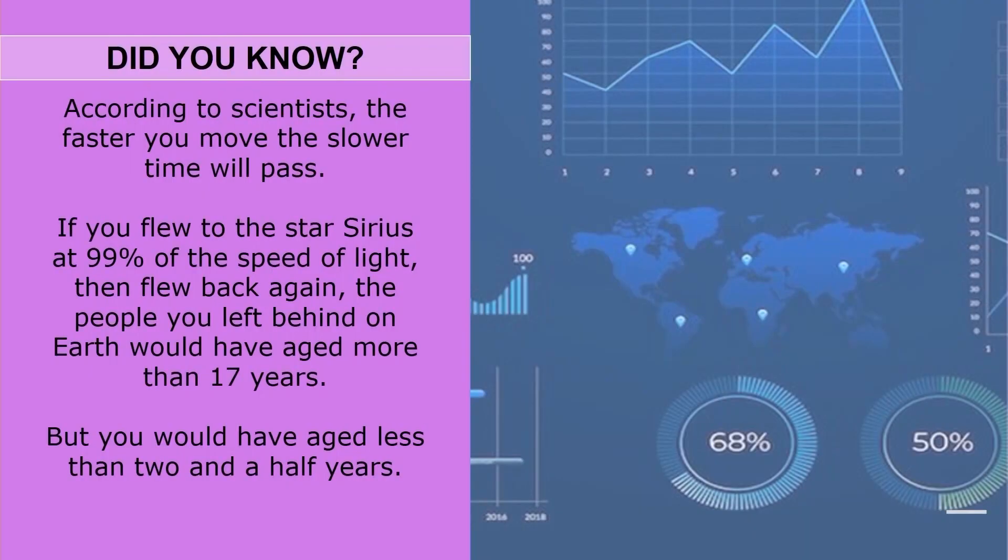Now did you know, according to scientists, the faster you move the slower time will pass. They say if you flew to the star Sirius at 99% of the speed of light and then flew back again, the people you left behind on earth would have aged by 17 years, but you would have aged less than two and a half years. So if you want to avoid getting older, run faster.